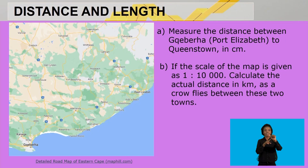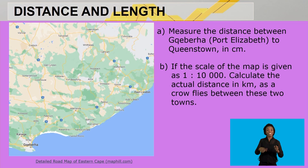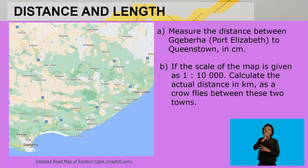Looking at the first example: Part A says to measure the distance between Uitenhage, which is Port Elizabeth, to Queenstown in centimeters. The instructions are clear that you should measure in centimeters. Part B states that if the scale of the map is given as 1:10,000, you should be able to recognize the type of scale — in this case, a number or ratio scale.